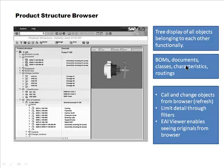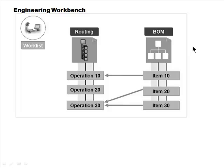From within the product structure browser you can call and change objects, limit the detail shown through filters, and the EAI viewer enables seeing original documents from within the browser by connecting to the document management system. So from within the browser you can go and see any original documents connected with the material. This is just one more tool that helps in managing the lifecycle of a product.